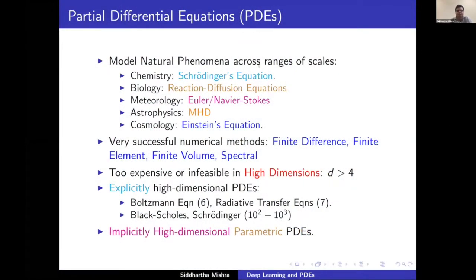Partial differential equations are ubiquitous in physics, science, and engineering—modeling phenomena across the whole range of scales. You can start with computational chemistry at the scale of the electron with the Schrödinger equation and go all the way through human scale to astrophysical and cosmological scales. Yesterday we had a Nobel Prize in cosmology, and Einstein's equation—a PDE—is a big player in that. Most PDEs are very difficult to solve analytically, so we have developed a whole toolkit of numerical methods.